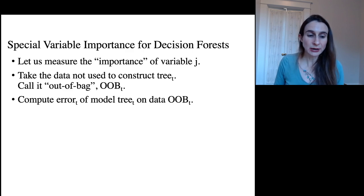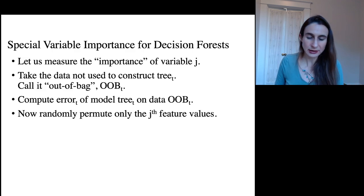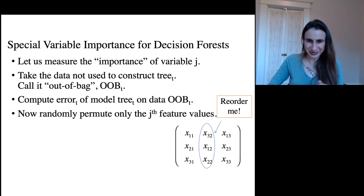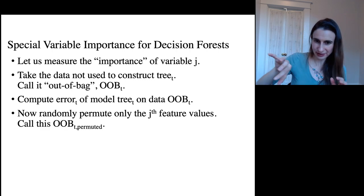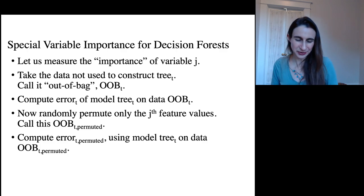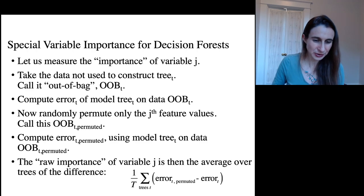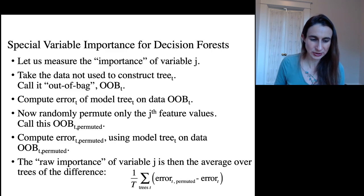You compute the error of the tree generated on iteration t on the out-of-bag data. Then you mess up that jth feature by scrambling it. We'll call this the out-of-bag permuted data — the out-of-bag data that's been permuted. All of this is done on the data that wasn't used to construct the tree at iteration t. Then you re-evaluate the error on this permuted out-of-bag dataset and compare the difference between the errors with and without that feature being messed up. That's called the raw importance of variable j for iteration t.